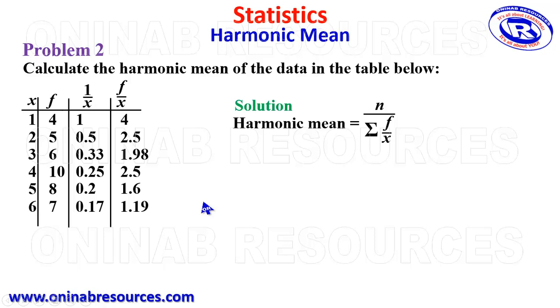We are done getting the required columns, then we do the necessary summation. n is summation of f, while we also do the summation of f over x. That is the second column and the last column. 4 plus 5 plus 6 plus 10 plus 8 plus 7 gives 40. 4 plus 2.5 plus 1.98 plus 2.5 plus 1.6 plus 1.19 gives 13.77.